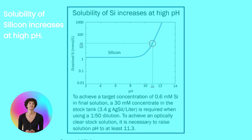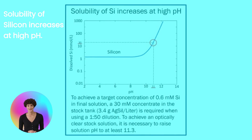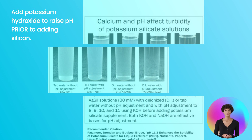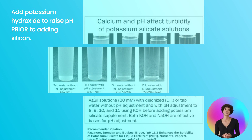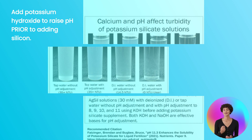The solubility of silicon begins to increase with increasing pH above 9. To achieve a target concentration of 0.6 millimole silicon in the final solution, a 30 millimole concentrate in the stock tank is required when using a 1 to 50 dilution. To achieve an optically clear stock solution, it is necessary to raise solution pH to at least 11.3.